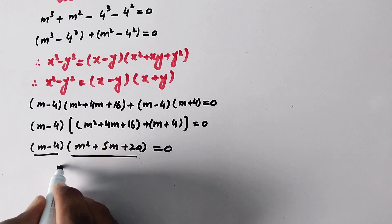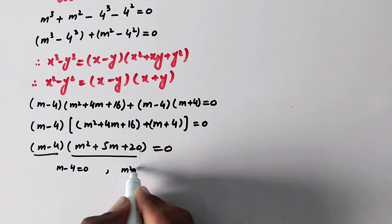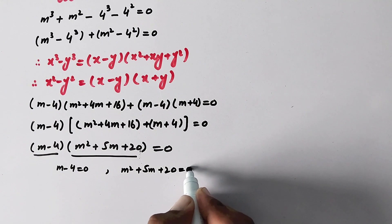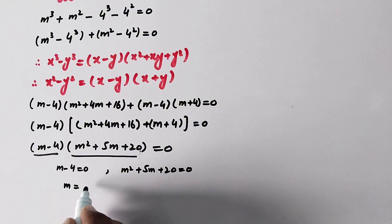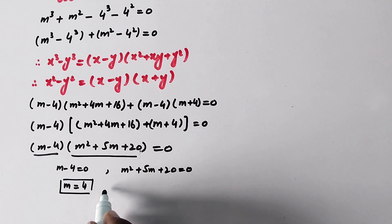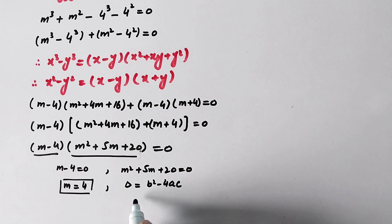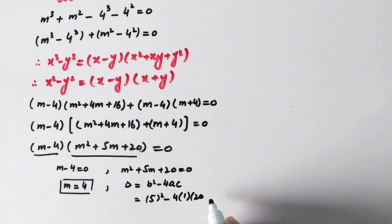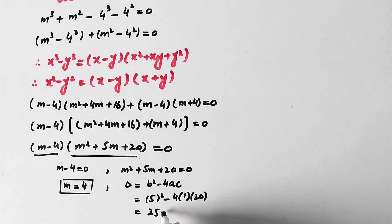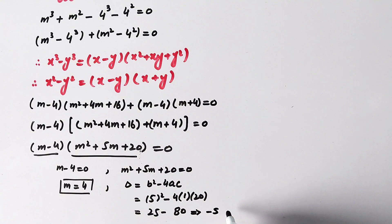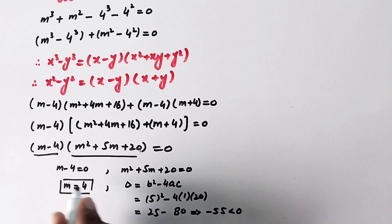So we have two factors: m minus 4 equals 0, and m squared plus 5m plus 20 equals 0. From the first factor, m equals 4. For the second factor we use the discriminant formula b squared minus 4ac, where a equals 1, b equals 5, and c equals 20. So discriminant equals 25 minus 80, which equals negative 55, which is less than 0. It means it has no real solution, so we proceed with m equals 4.